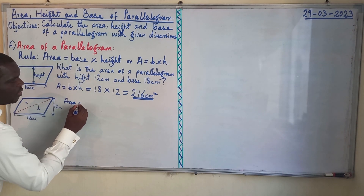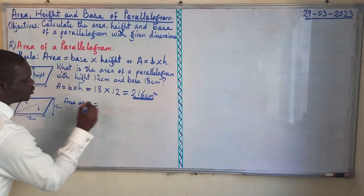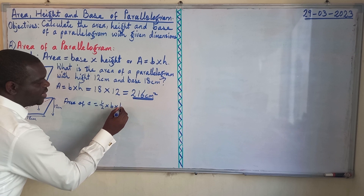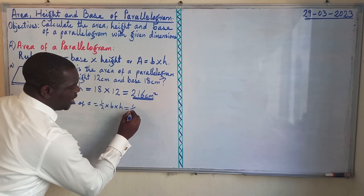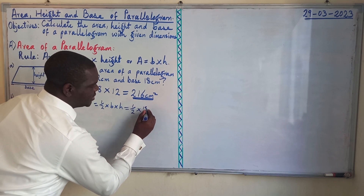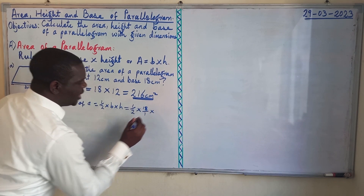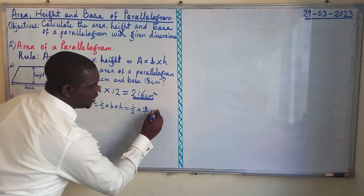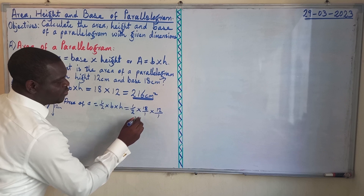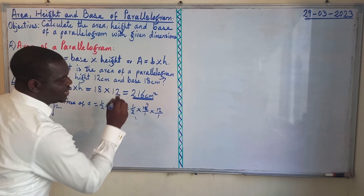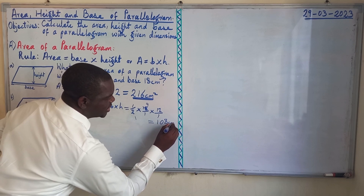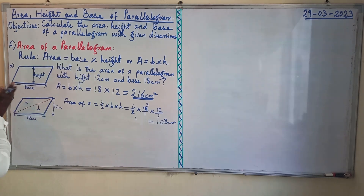Area of triangle A = ½ × base × height = ½ × 18 cm × 12 cm. Simplifying: 2 into 18 goes 9 times, and 9 × 12 = 108 centimeters squared. That is one half.